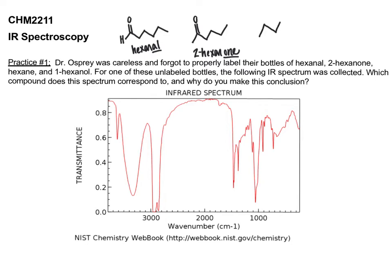Hexane, going way back to chapter three when we first learned nomenclature, hexane is just going to be our six carbon chain. No functional groups outside of alkanes. And then 1-hexanol, six carbon chain with the alcohol group at carbon number one.